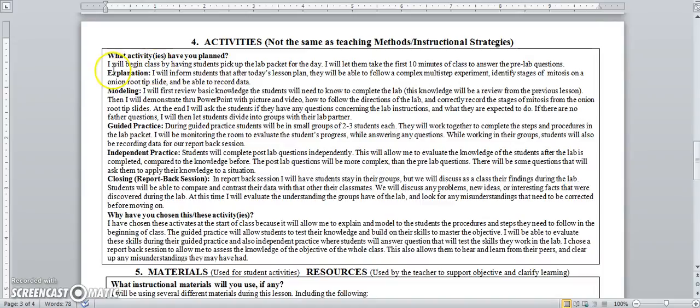At the beginning of the class, I will have students pick up their packet for that day and they'll take the first ten minutes or so of class to answer some pre-lab questions. Then we'll move on to the explanation and I will inform students that after today's lesson plans, they'll be able to follow a complex multi-step experiment, identify stages of mitosis on an onion root tip slide, and be able to record data.